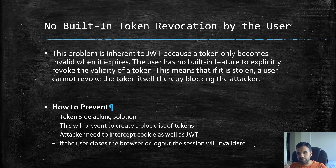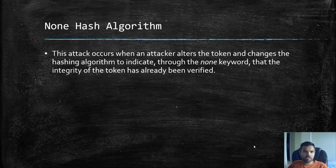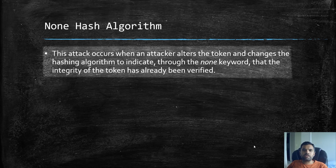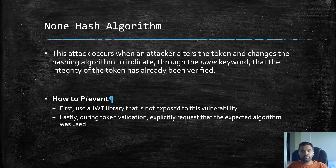The none hash algorithm attack: this occurs when an attacker alters the token and changes the hashing algorithm to indicate, via the 'none' keyword, that the integrity of the token has already been verified. This was discussed in the previous lecture — why the none algorithm should never be used.